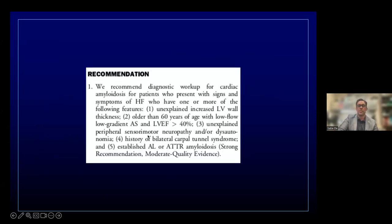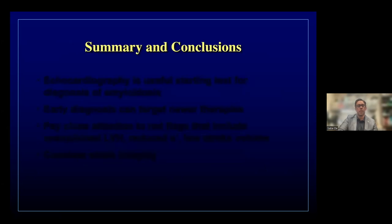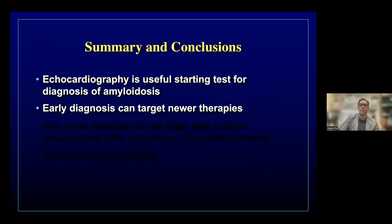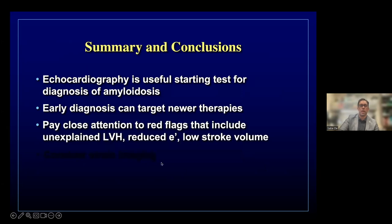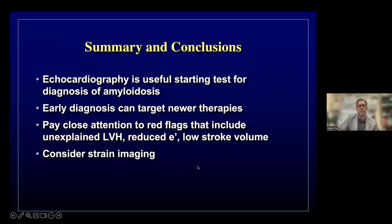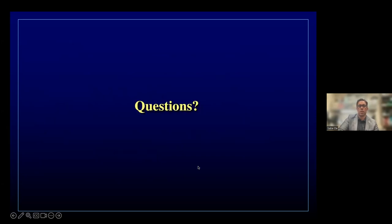From the heart failure guidelines, a diagnostic workup for cardiac amyloidosis is recommended for patients with signs and symptoms of heart failure including increased LV wall thickness, low flow low gradient aortic stenosis, neuropathy, and carpal tunnel syndrome. In summary, echocardiography is a very useful starting test for the diagnosis of amyloid. Early diagnosis may be helpful in targeting newer therapies, and the red flags really include unexplained LVH out of keeping with standard hypertensive heart disease, reduced diastolic parameters and stroke volume, with strain imaging also valuable.